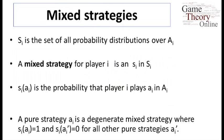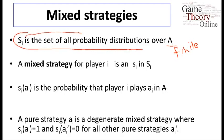In order to define mixed strategies, we're going to allow the players to randomize. Instead of just picking one action for sure, they might choose different actions with different probabilities. We're still working with AI as the pure actions available to each player, and for now let's stick with finite sets. Then we can talk about the set of probability distributions over these actions. So maybe a player picks being active two-thirds of the time and passive one-third of the time, or half-and-half, or seven-eighths, one-eighth.